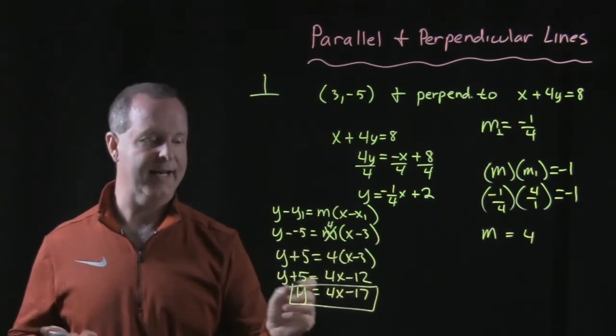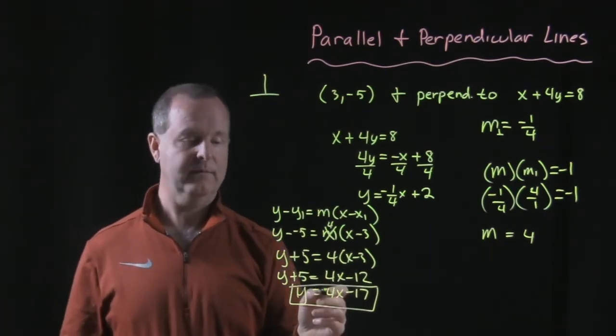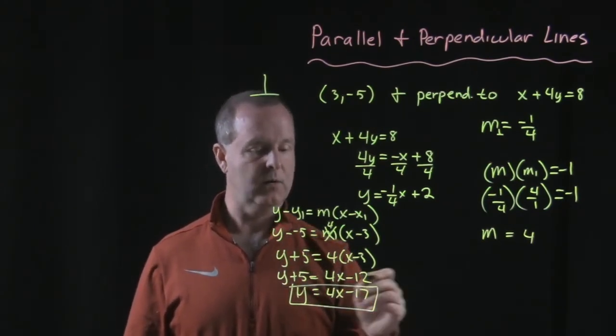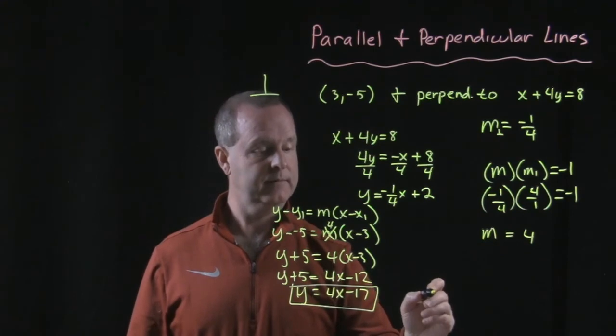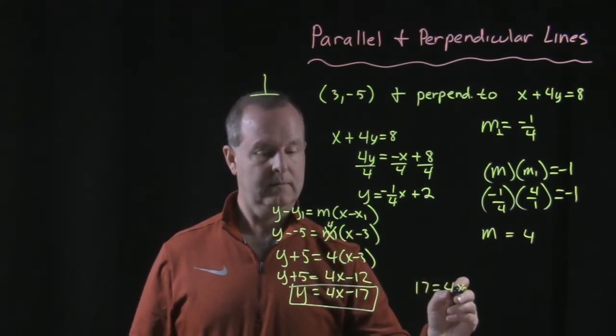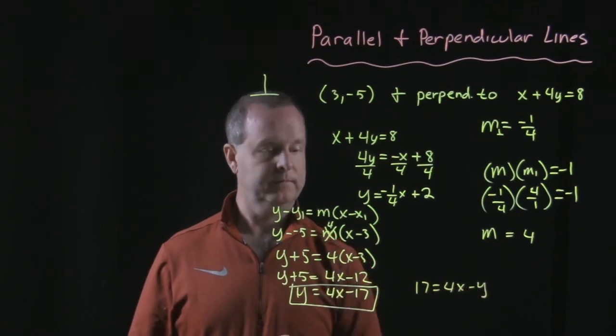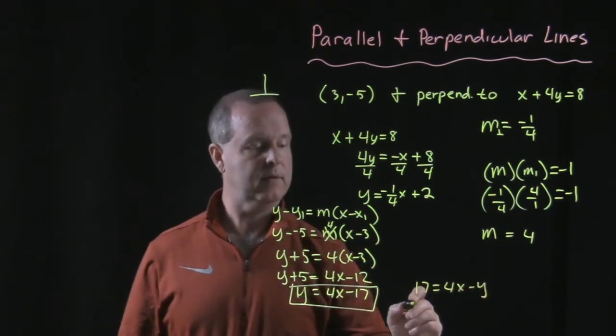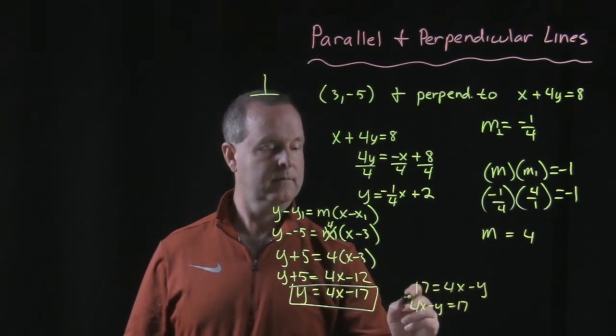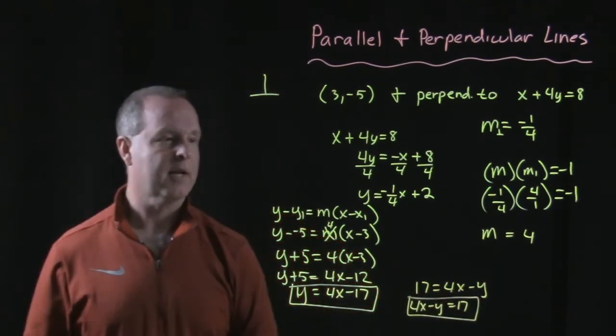And then for fun, because we're getting good at it, let's write that in standard form, which has x's and y's on one side. So let's subtract y from both sides and add 17 to both sides. And there's standard form. All right, you guys like it? The x is in front. There you go.